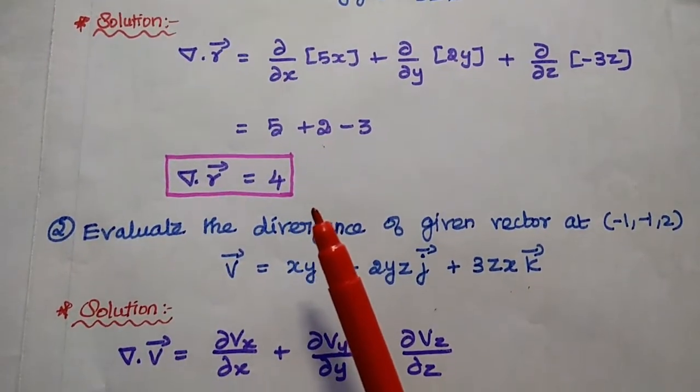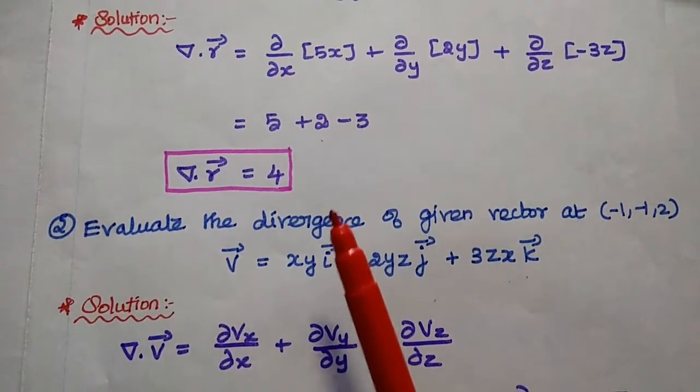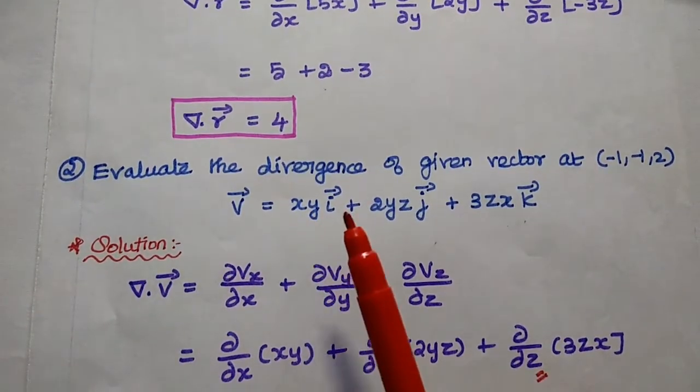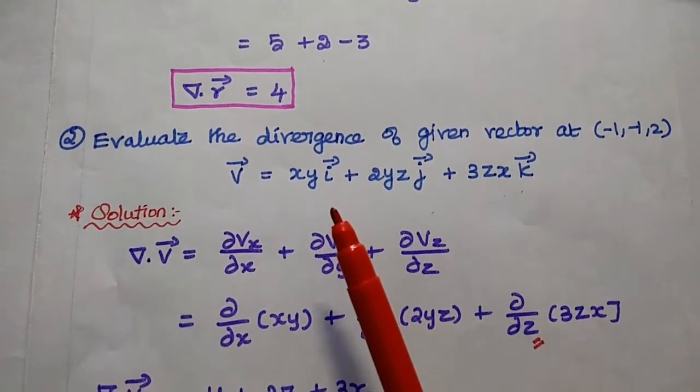The result is a scalar quantity. The divergence of a vector is always a scalar quantity.